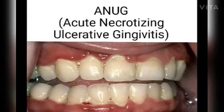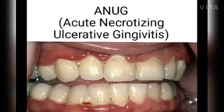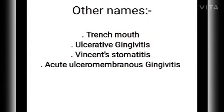Hello everyone. In this video we are going to discuss about ANUG, which stands for Acute Necrotizing Ulcerative Gingivitis. There are several other names such as trench mouth, ulcerative gingivitis, Vincent's stomatitis, and acute ulceromembranous gingivitis.